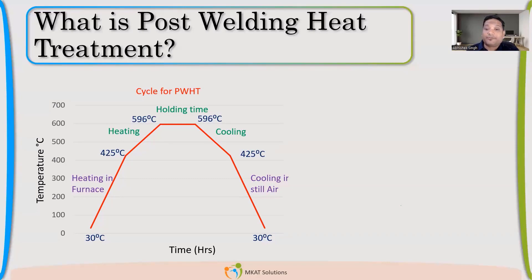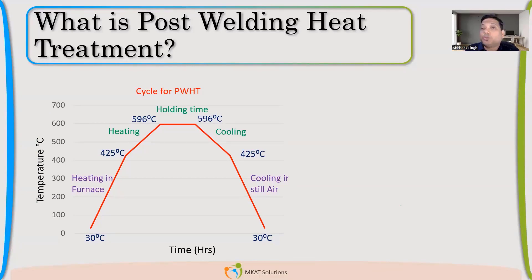Below the first critical temperature, there will be a zone — a band — where recrystallization will happen. We are trying to heat our material below the first critical line so that we don't change the properties of the material; we just want to relieve the stresses. If we enable recrystallization, the stresses will be relieved. For that, we do heat treatment — either in a furnace, or we locally create a furnace. That is also possible if we have to do post-weld heat treatment on a localized area.